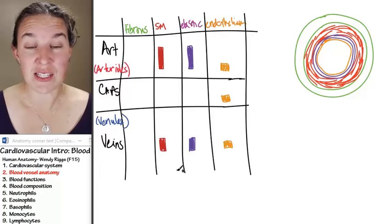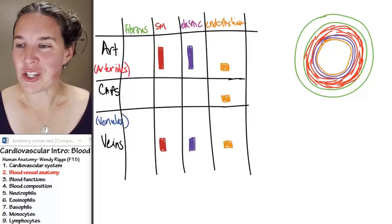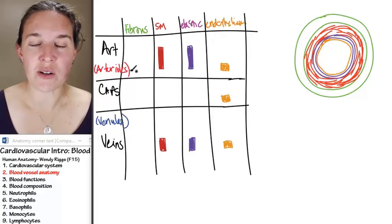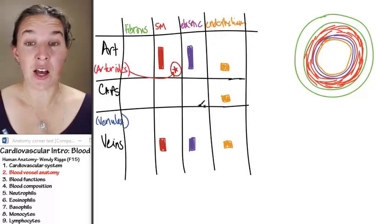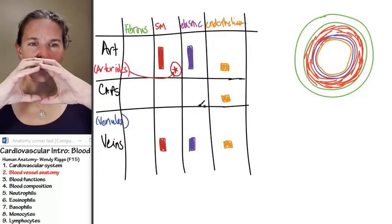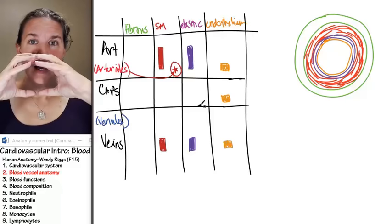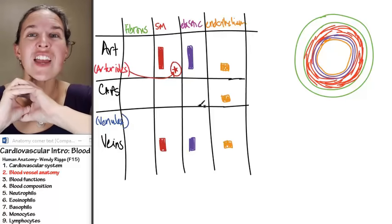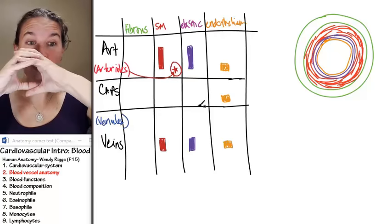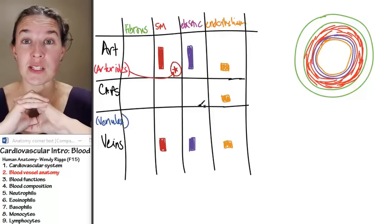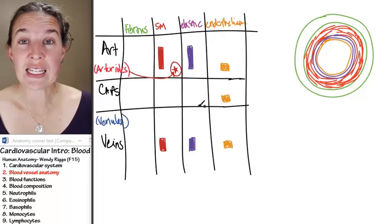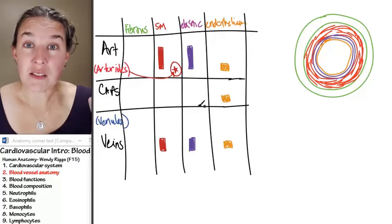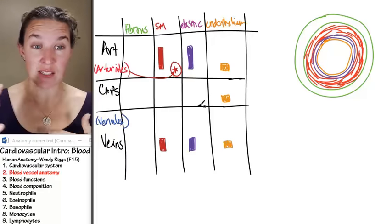Veins do have some smooth muscle. I want to make a special note in smooth muscle land for the arterioles. So, look at this. Look at what I'm doing. I'm making a special note for the arterioles. Arterioles have a lot of smooth muscle. What is smooth muscle going to do? Smooth muscle contracting is going to vasoconstrict or decrease the diameter of your blood vessels. If it relaxes, it's going to increase the diameter or vasodilate.